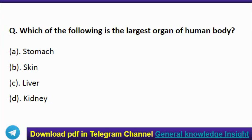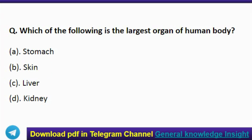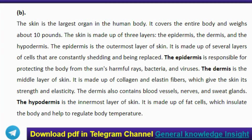The next question: which of the following is the largest organ of the human body? The correct answer is option B, skin. The skin is the largest organ in the human body. It covers the entire body and weighs about 10 pounds. The skin is made up of three layers: the epidermis, the dermis, and the hypodermis.